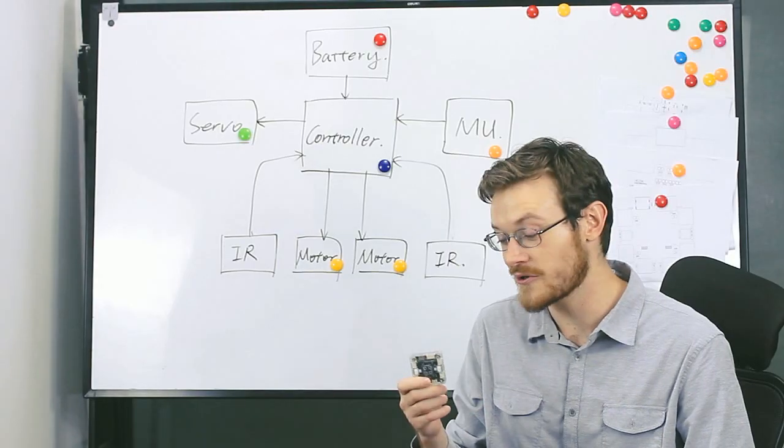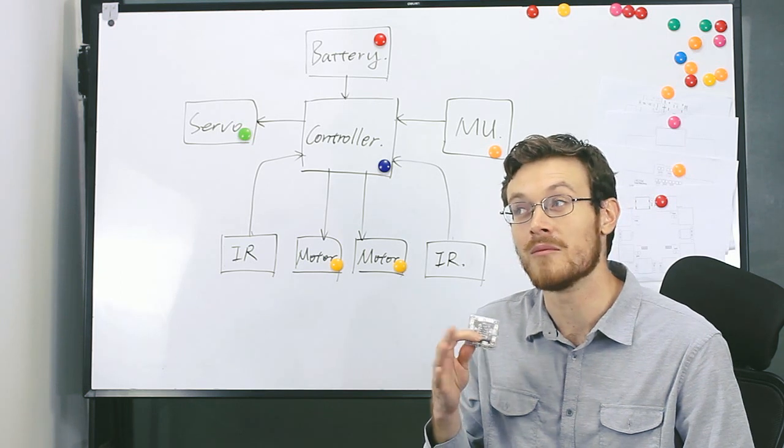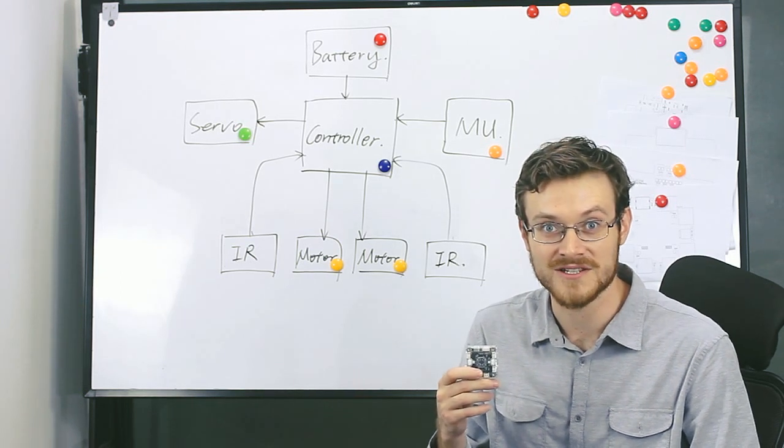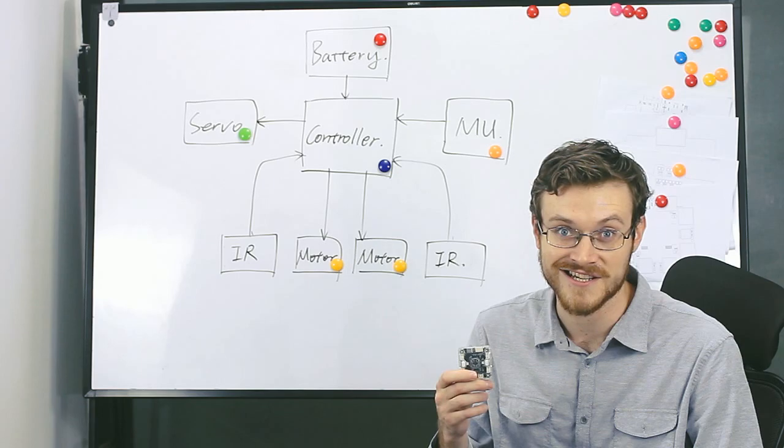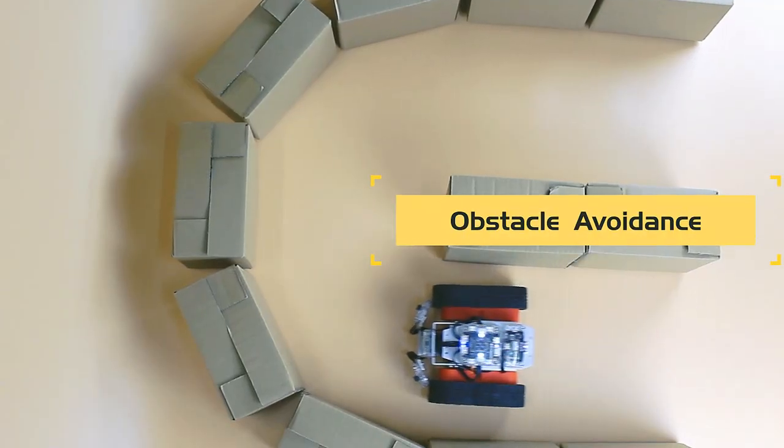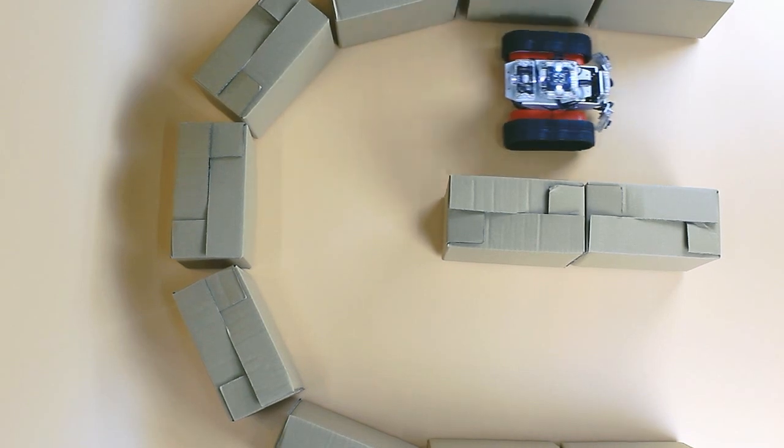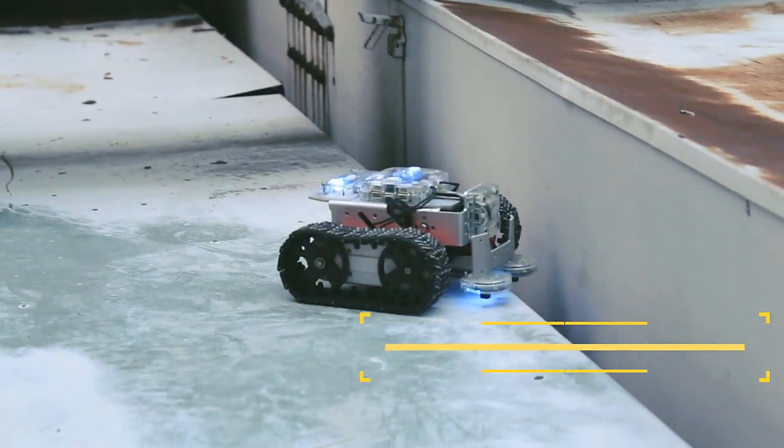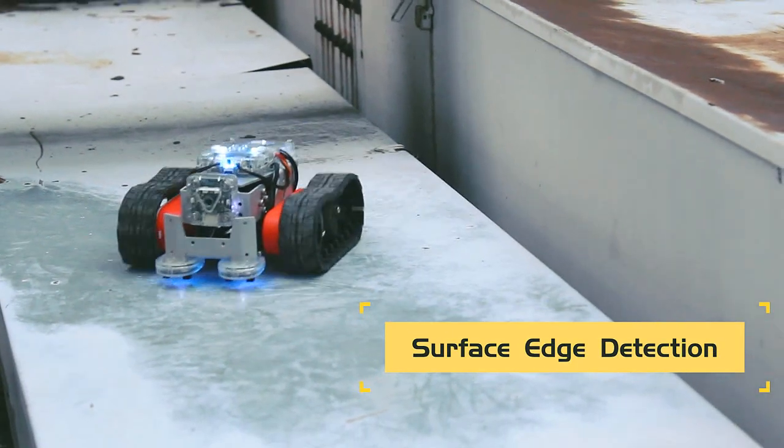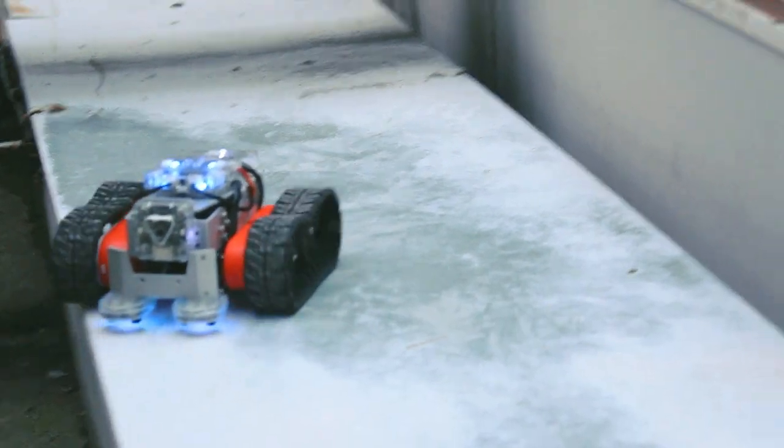The controller has 15 connector ports, which provide a multitude of module combinations, making it perfect for robotics education. The Moonbot Kit will provide 8 well-designed electronic modules and will support more with future updates. The controller also supports third-party modules that are Arduino compatible.